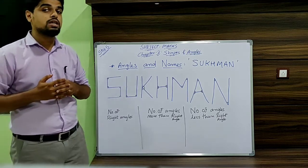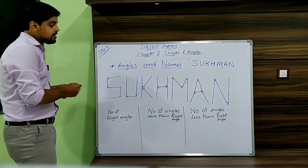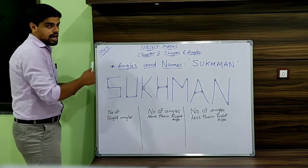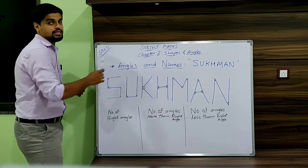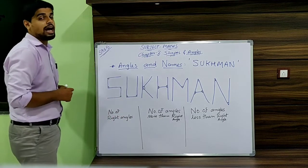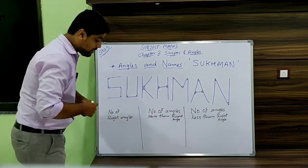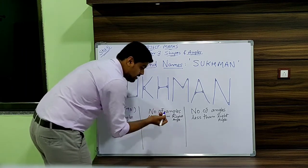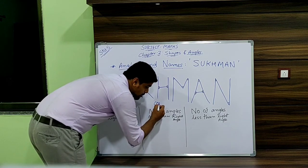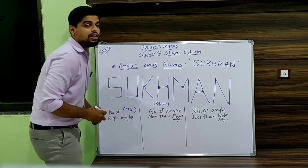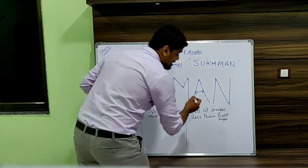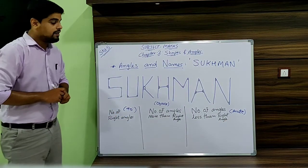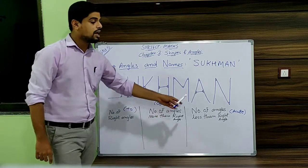Let's see how these names have angles. In our case the name is Sukhman. We have to first find how many right angles there are, then find how many angles are more than 90 degrees — that is, obtuse angles — and finally the number of angles less than 90 degrees, which are acute angles. We have already studied what right angle, obtuse angle, and acute angle are.